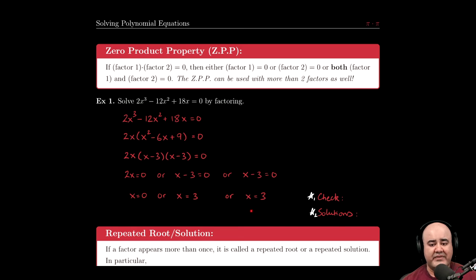Here we have three roots or three solutions or three x-intercepts: x = 0, x = 3, and x = 3 again.